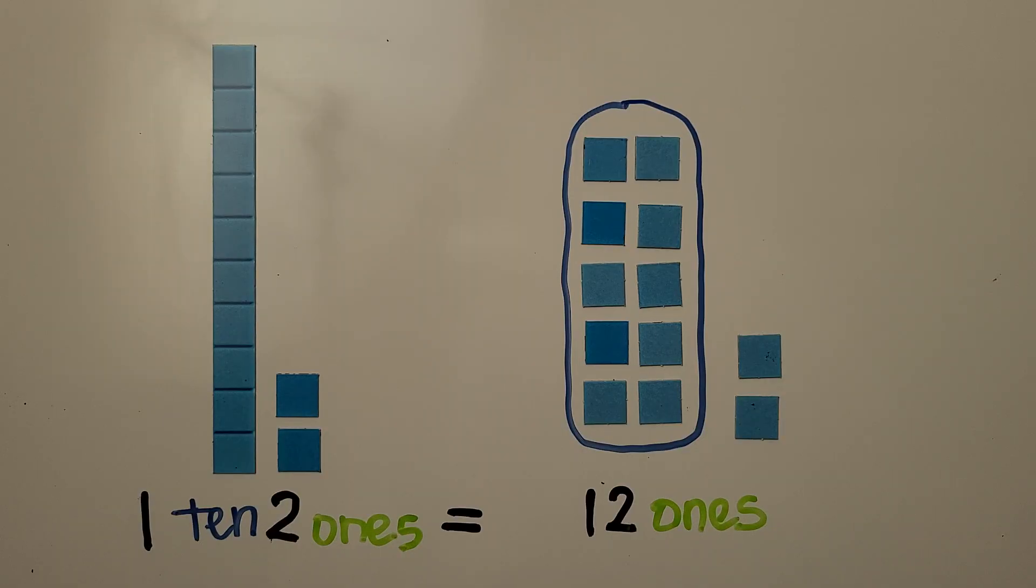One ten, two ones is equal to twelve ones. We regroup the one ten as ten ones, and we have eleven, twelve ones.